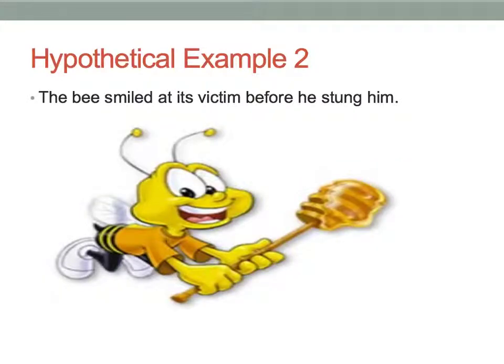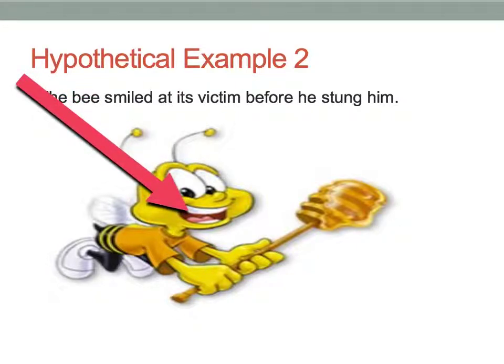For my second example, I said the bee smiled at its victim before he stung him. Here we have a bee sporting a smile. Personification is in play because bees don't actually have the human trait of smiling. In this example, the bee is able to smile. Companies will use personification on animal characters — for this example, this would be Buzz for Honey Nut Cheerios — to appeal emotionally to their audience, which in this case would be children.